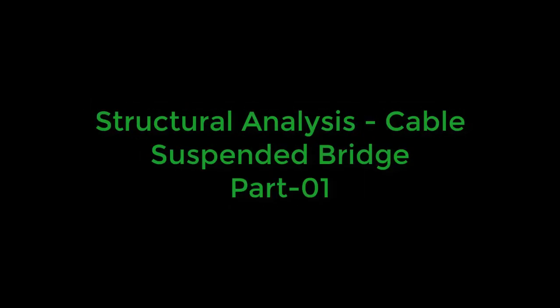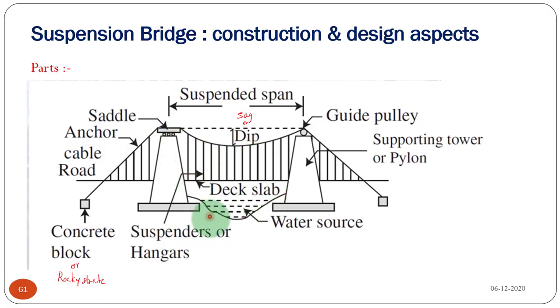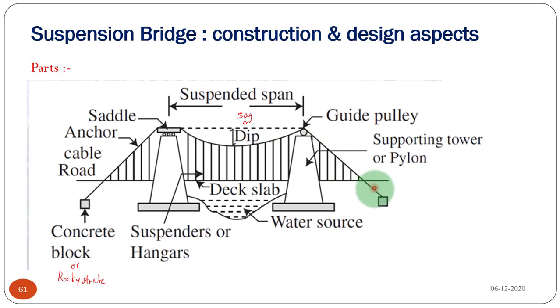We have started this discussion and seen the different components of a suspension bridge. This is your deck slab or roadway, and this is your main cable. The maximum distance of the main cable from the horizontal is called dip or sag. The main cable is taken over the vertical tower, either by using a pulley-type support or a saddle support. This is the anchor cable, anchored to the ground. This is the vertical tower or pylon, and this is the suspended span. Usually, the dip or sag will be L/10, where L is the span of the bridge.